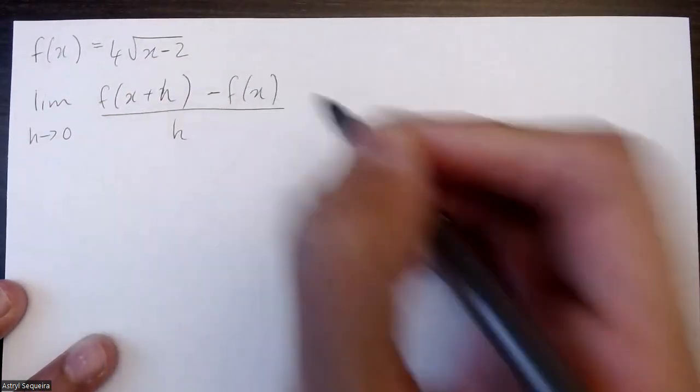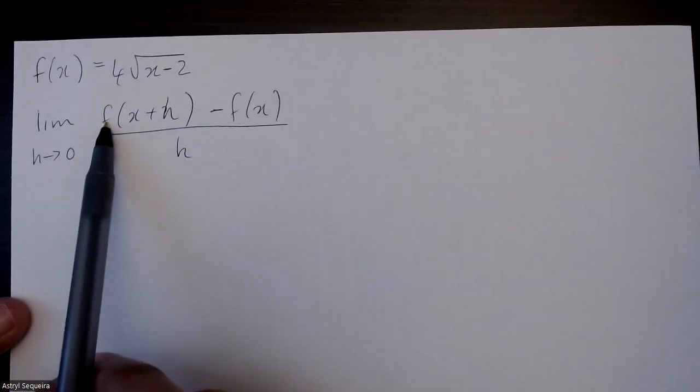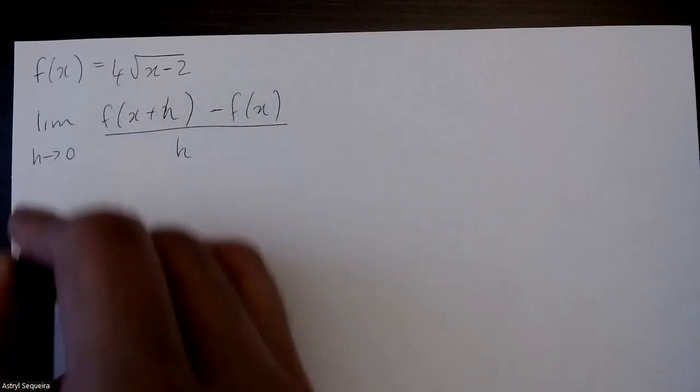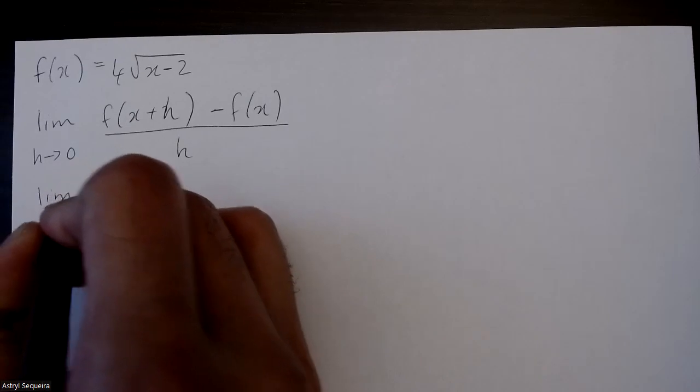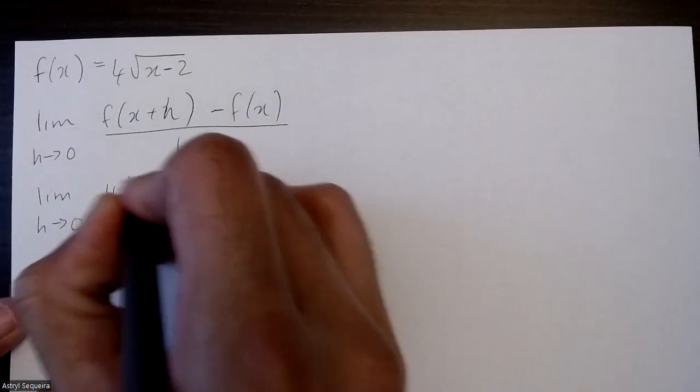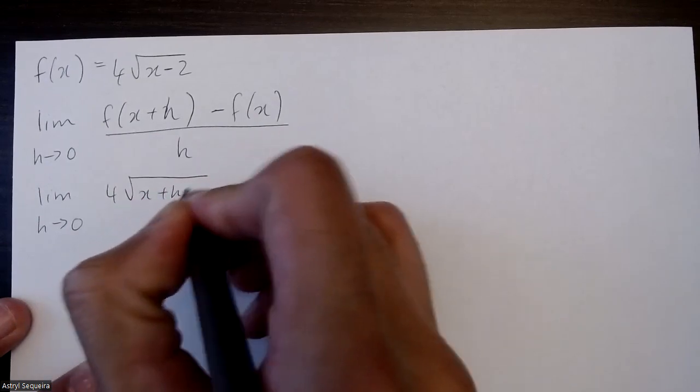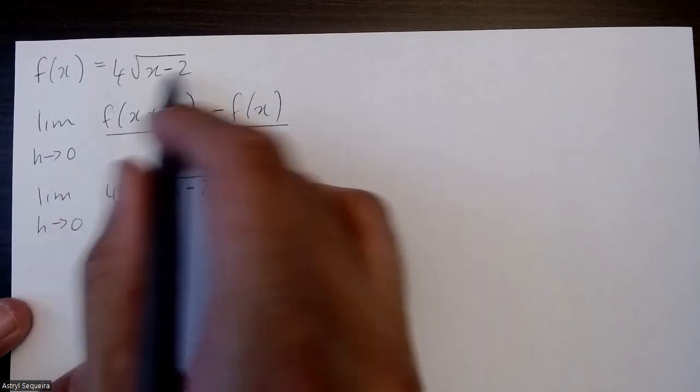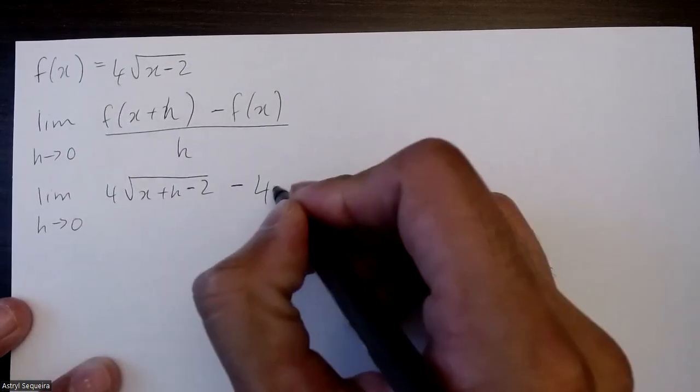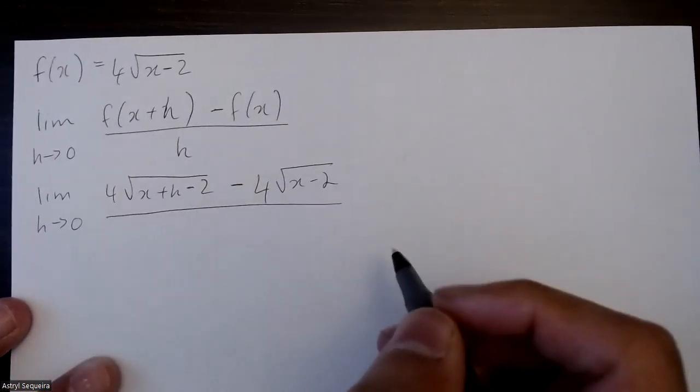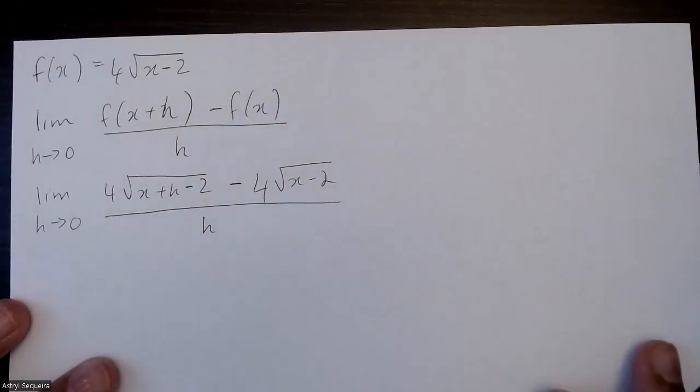So we've got to replace the x in the equation with x plus h for this part here. So I have lim h approaches 0, 4 root x plus h minus 2, and we want to subtract f of x here, which is basically just the same equation, 4 root x minus 2, and then we're dividing this all by h.